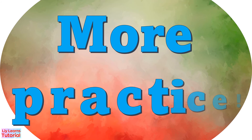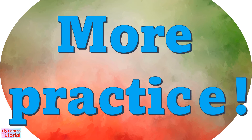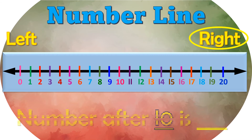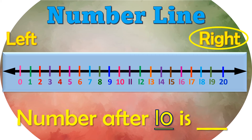Let's do more practice. What's the number after 10? First, we circle 10 on the number line. Then we look at the number next to it at the right side. So the answer is 11.